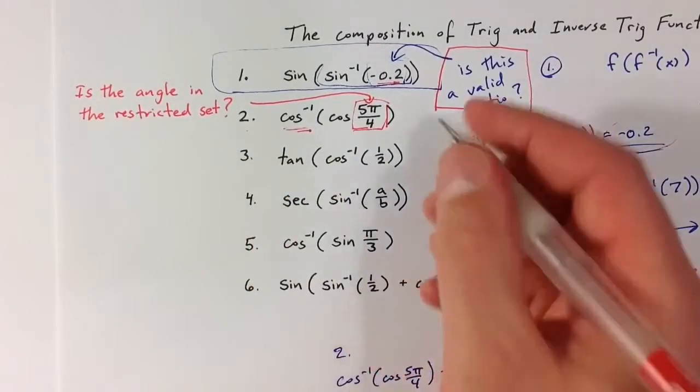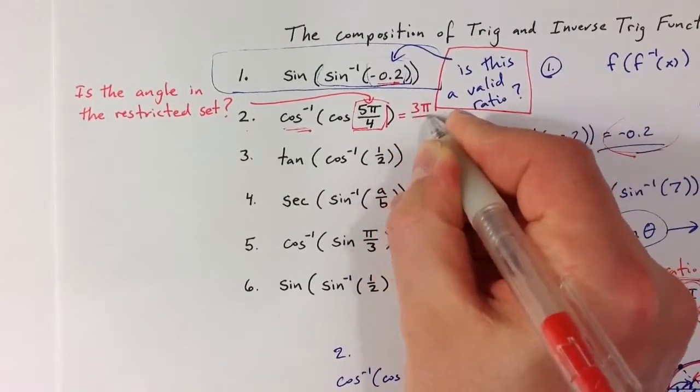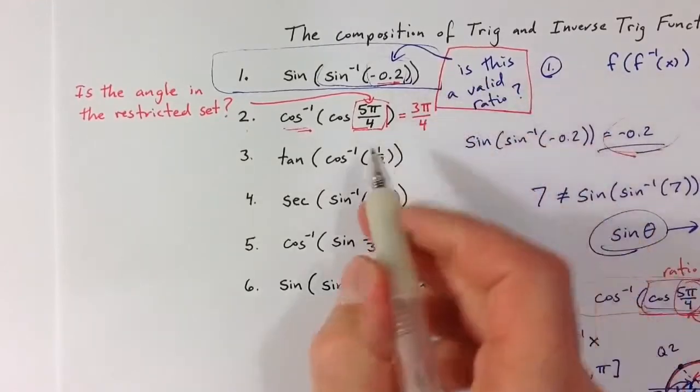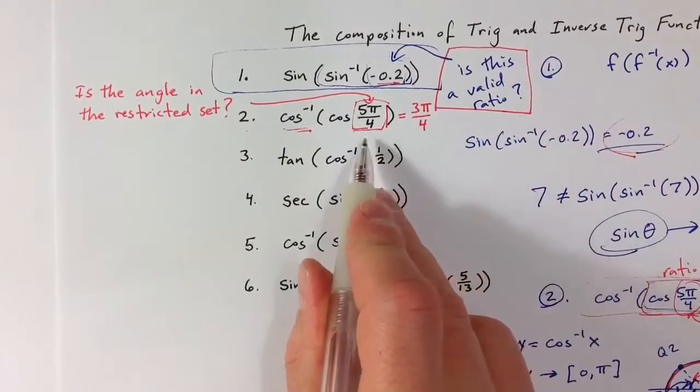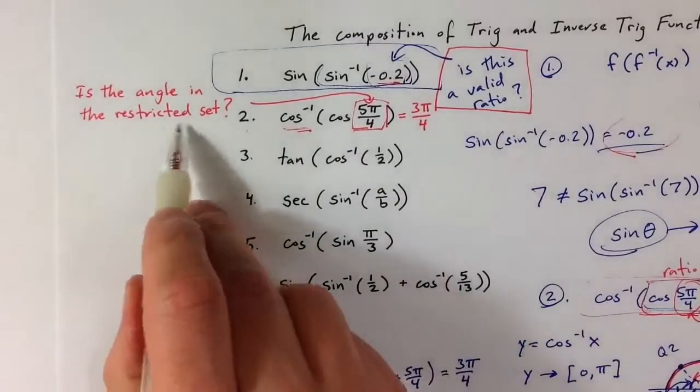If it is, then that's what the answer is. If not, we have to find the angle that does correspond to that. And so we saw that this was 3 pi over 4 because 5 pi over 4 is outside of that range of valid angles of the restricted set.